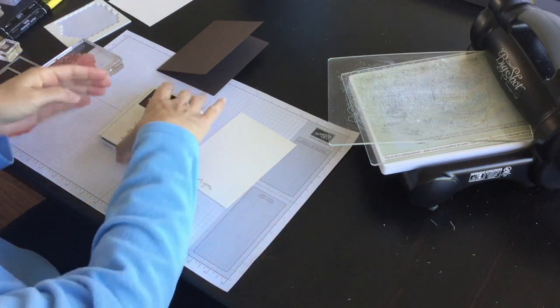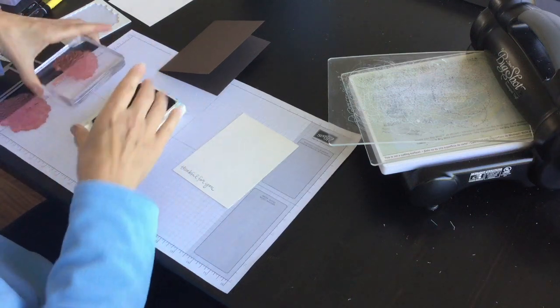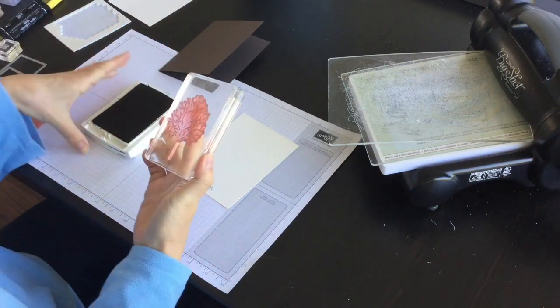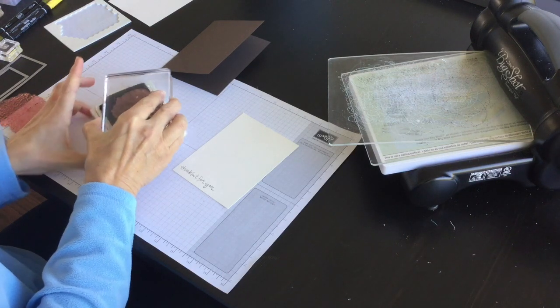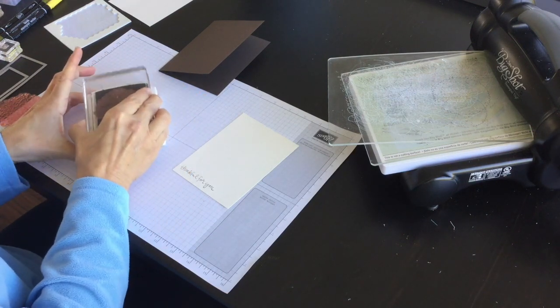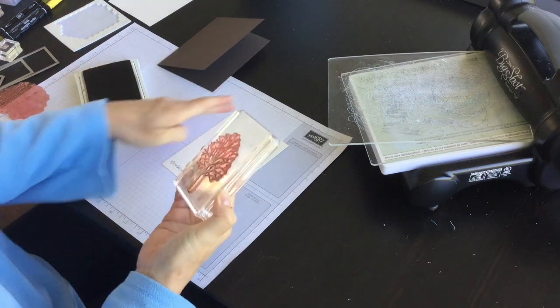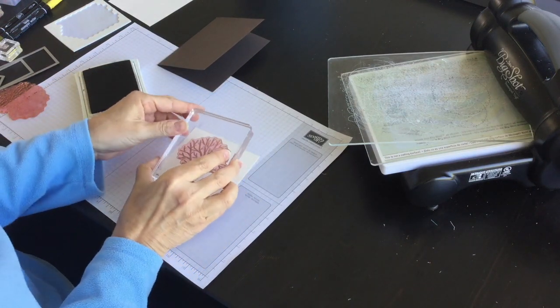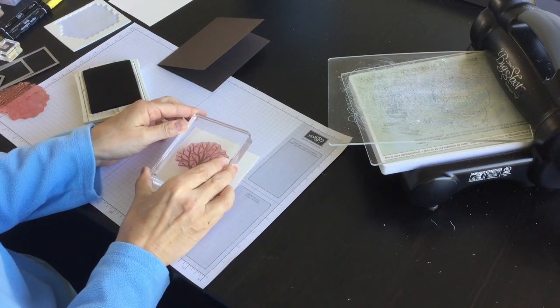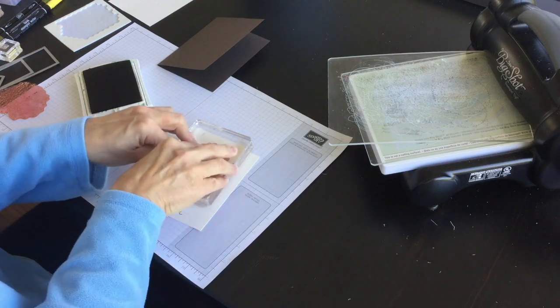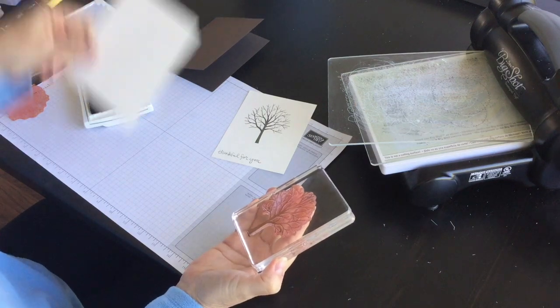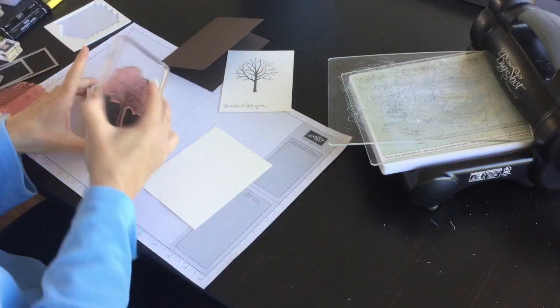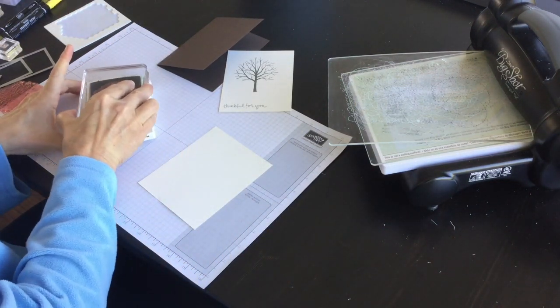Then the next thing I'm going to do is take the tree image from the sheltering tree stamp set and I'm going to ink that up using early espresso and stamp it down like so on the front of my card. Then I have a scrap piece of very vanilla and I'm going to ink this image again and stamp it down on there.